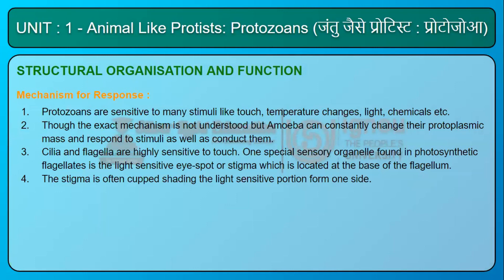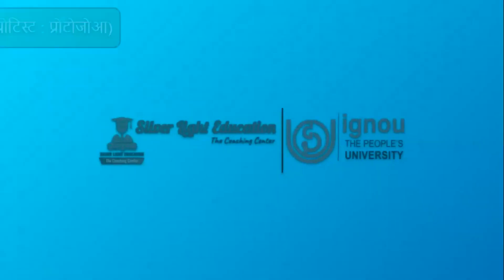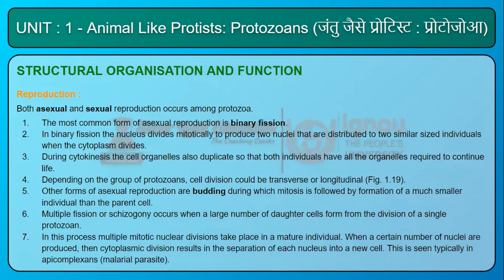Mechanism for Response: Protozoans are sensitive to many stimuli like touch, temperature changes, light, and chemicals. Although the exact mechanism is not fully understood, amoeba can constantly change their protoplasmic mass and respond to and conduct stimuli. Cilia and flagella are highly sensitive to touch. One special sensory organelle found in photosynthetic flagellates is the light-sensitive eye spot or stigma, located at the base of the flagellum; the stigma is often cupped, shading the light-sensitive portion from one side.